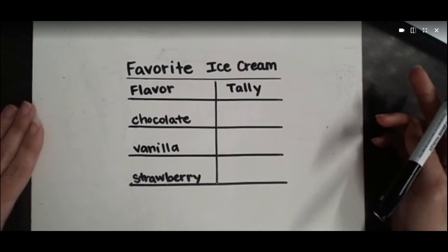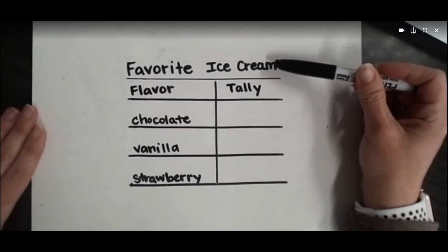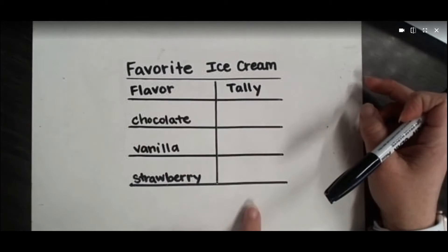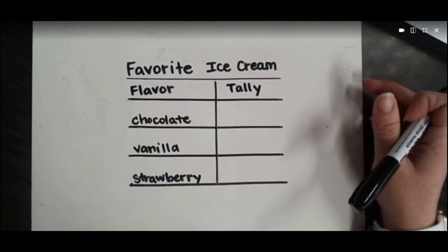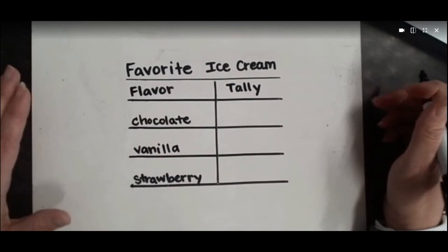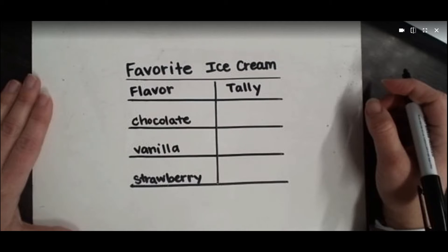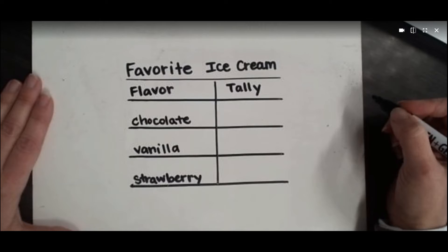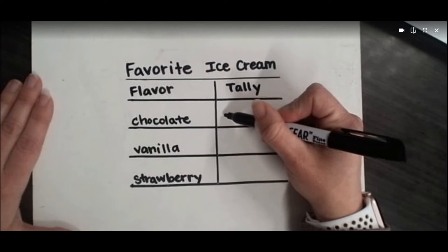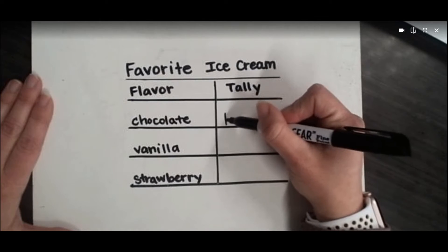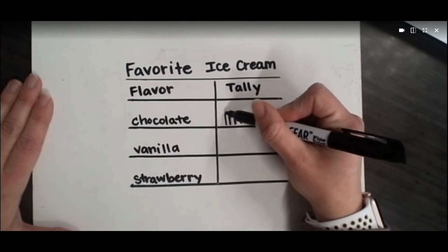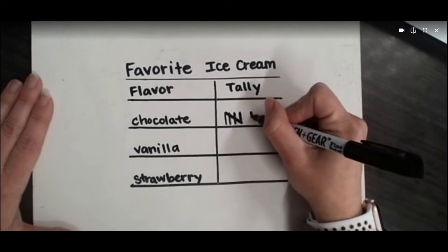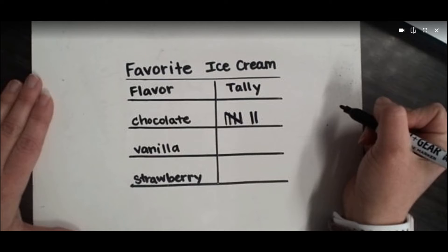I have drawn a chart here where we are going to talk about favorite ice cream. On one side I have the flavors and over here I have a column for tally marks. When we do a pictograph with tally marks, let's say I asked the whole class what their favorite ice cream was and seven people chose chocolate. The way I show seven with tally marks: one, two, three, four, five — every time you get to five you close that gate — six, seven, and then skip a space and start again.